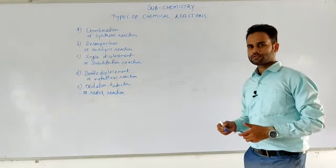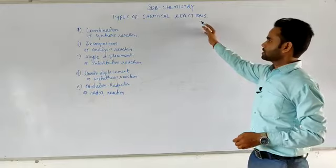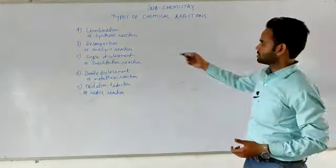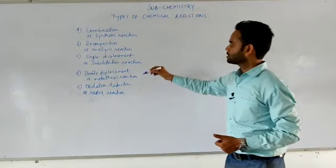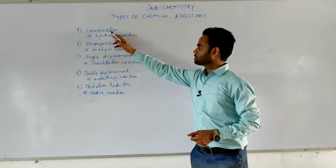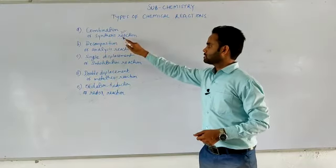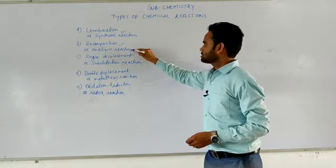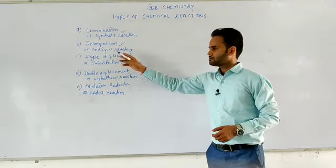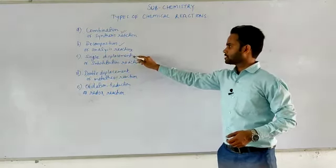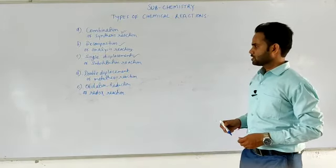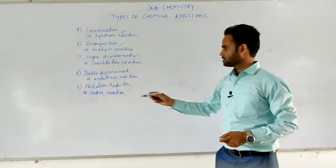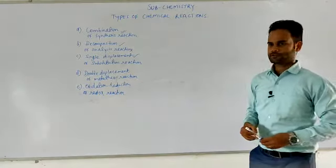Hello students, in this video we are going to talk about the types of chemical reactions. There are so many types, but in class 10 there are some basic types: combination reaction (also known as synthesis reaction), decomposition reaction (also known as analysis reaction), single displacement or substitution reaction, double displacement or metathesis reaction, and oxidation-reduction or redox reaction.